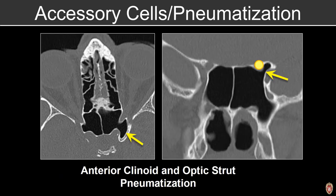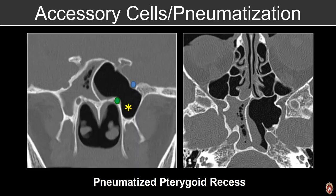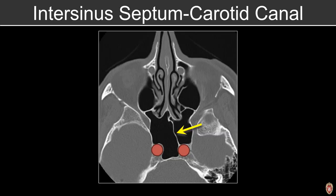We'll also comment on pneumatization of the clinoid process or the optic strut. Pneumatization of the pterygoid recess is important particularly when evaluating for a potential site of a CSF leak, meningocele, or encephalocele, as the bone covering a pneumatized pterygoid recess is often very thin and is a common site for a CSF leak. We'll also want to review the posterior attachment of the intrasinus septum within the sphenoid sinus prior to transsphenoidal surgery — in this example the posterior attachment attaches to the carotid canal.